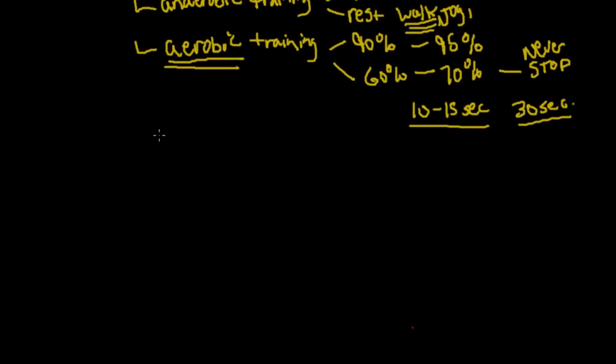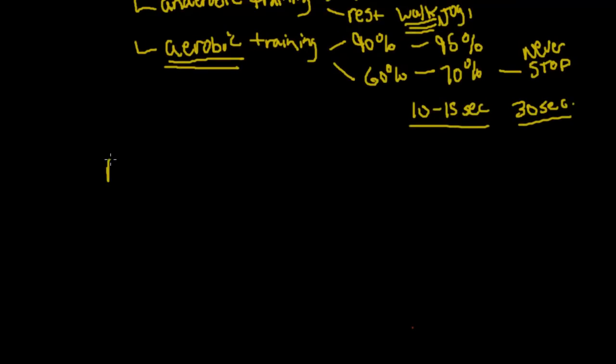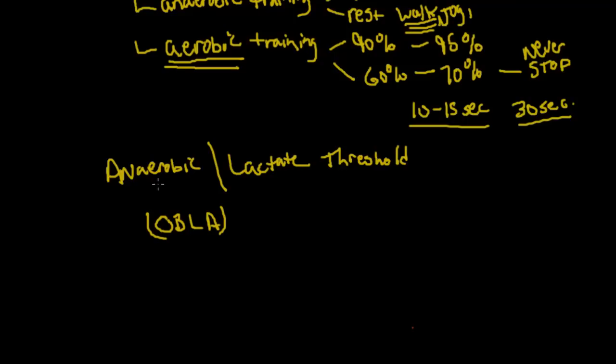This type of training is used to improve your anaerobic threshold. I'm also going to put lactate threshold. And essentially these measure the same thing. So we're concerned with onset of blood lactate accumulation. These are ways of measuring onset of blood lactate accumulation. So that point at which the lactic acid builds up in the blood that's going to start causing fatigue. It gets higher than normal limits.